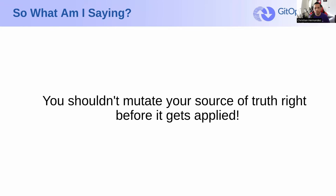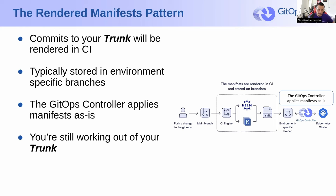Having your GitOps tooling run Helm or Kustomize right before applying the manifest to the cluster is like having your container run 'apt-get install' on startup — you're mutating it right before it gets applied. So what's the solution? What is the pattern? This is where the rendered manifest pattern comes in. The solution is called the rendered manifest pattern. Each change to the trunk or main branch of your GitOps repo will result in the manifests getting rendered by a CI workflow and stored as-is in Git.